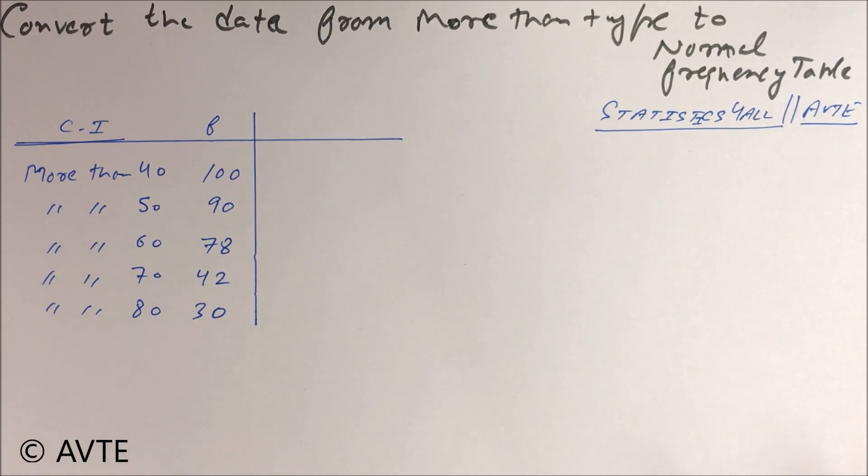It is important for drawing graphs, drawing ogives, drawing cumulative frequency curves, to find mean, median, mode, mean deviations, and standard deviation. Basically, it is how to find the normal frequency distribution. So this is your more than data in front of you. I will tell you the super trick to convert the data to the normal one.